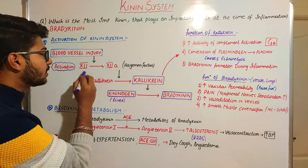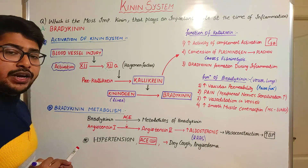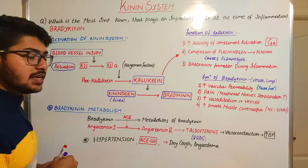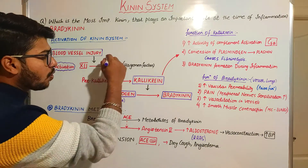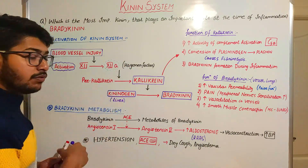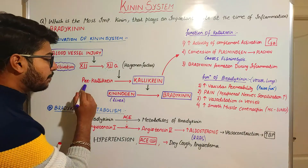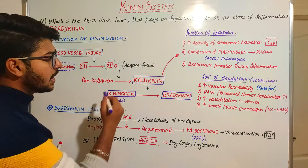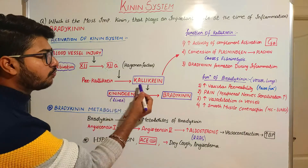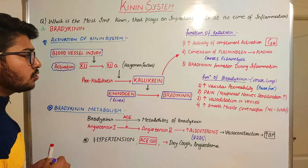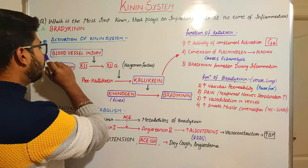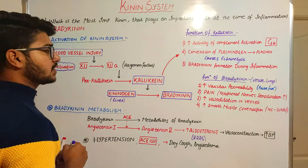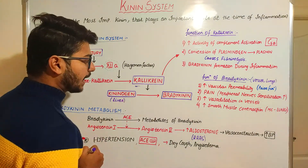Hageman factor is nothing but coagulatory factor number 12. It will be activated as 12A. This coagulatory factor 12A will further activate prekallikrein, which is present in the blood vessels and plasma, to form kallikrein. So due to the injury of the blood vessel, we are going to see this kallikrein.